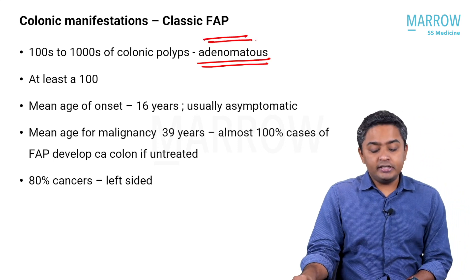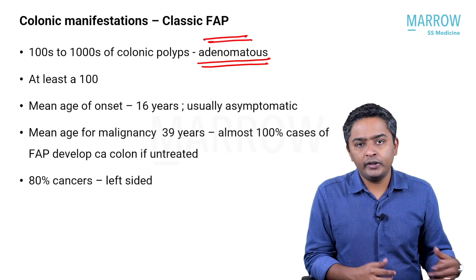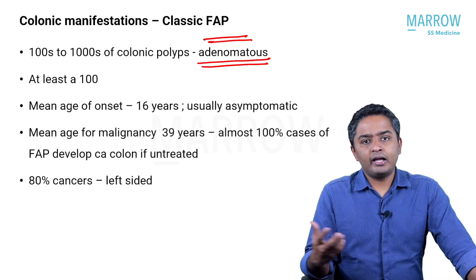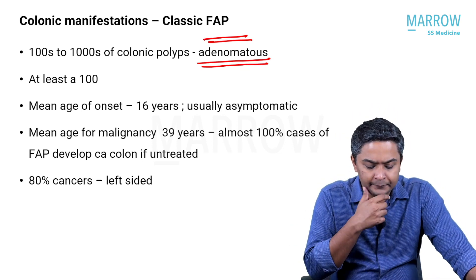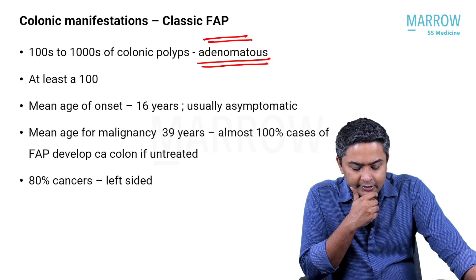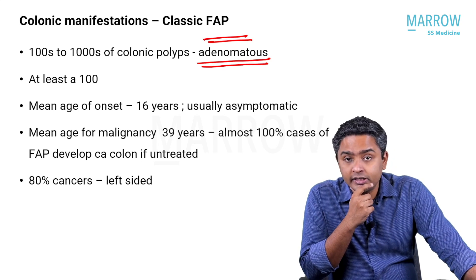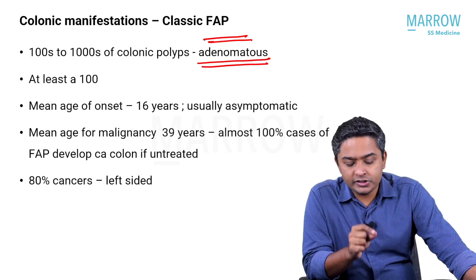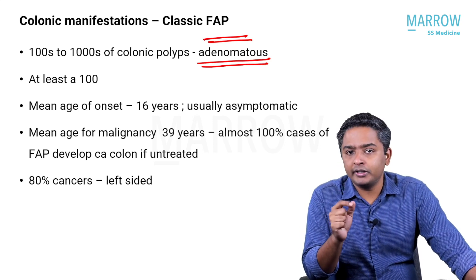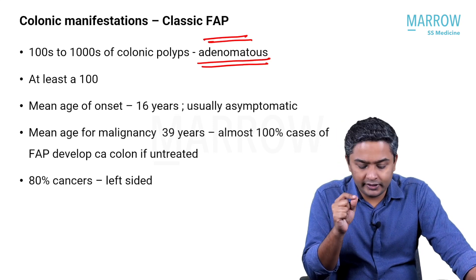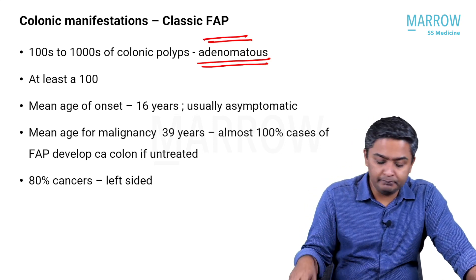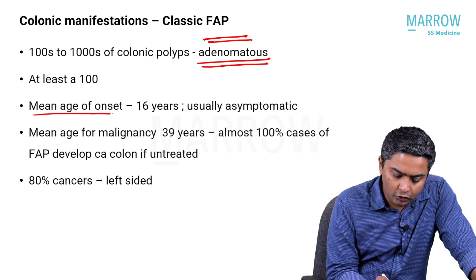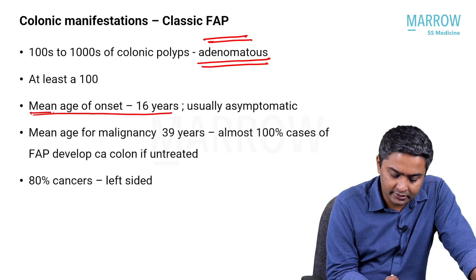There is a significant chance, almost near always, of malignant transformation. The mean age of onset for polyps — the age at which polyps start occurring on average — is 16 years. This is an important question. The mean age of onset of polyps is usually 16 years.